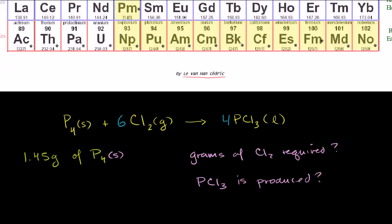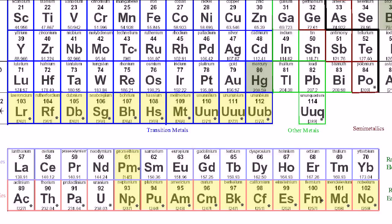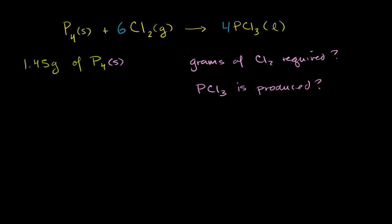Let's look at our periodic table. Phosphorus has an atomic weight of 30.974 — let's just round that up to 31. So phosphorus has an atomic weight of 31, which tells us that a mole of phosphorus will weigh 31 grams. A mole is 6.02 times 10 to the 23 — a huge number of atoms. If you have that many atoms of atomic phosphorus, it's going to weigh 31 grams.